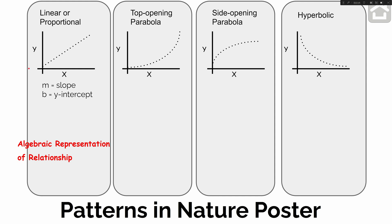When there's a linear relationship, the general form of any line is y equals m times x plus b. So if the original graph is linear, we get the slope, we get the y-intercept, and we can essentially write the equation for whatever specific linear graph we have. But what if we have a top-opening parabola, a side-opening parabola, or a hyperbolic relationship? How do we write the equations for those types of nonlinear relationships?